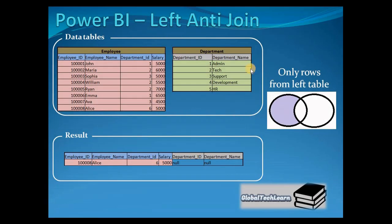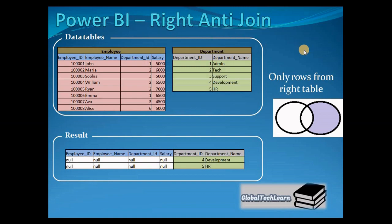The next is left anti join. In left anti join, we get only those records from the left side of the table which do not meet the join condition with the right side. So department ID 6 has no matching record in the department query, and only that record appears from the left side. The last is right anti join. In right anti join, only those records from the right side which do not meet the join criteria are returned. Department ID 4 and 5 have no matching record in the employee query, so the result set contains only those records from the department query — that is department ID 4 and department ID 5.